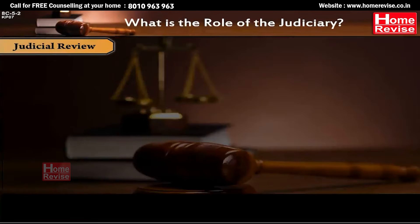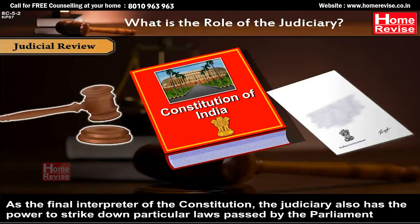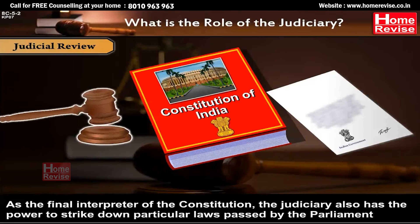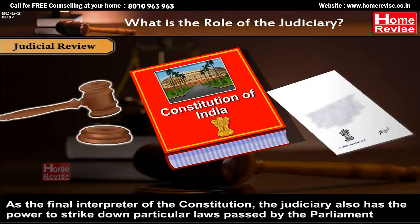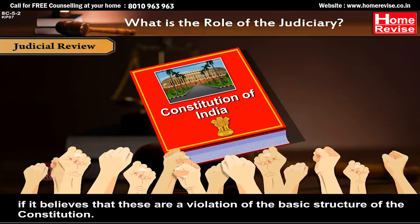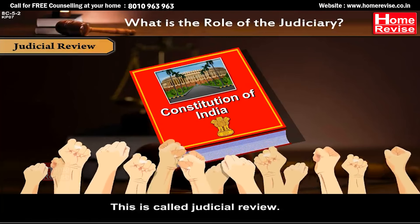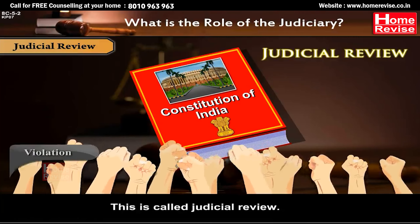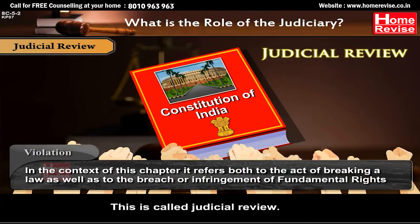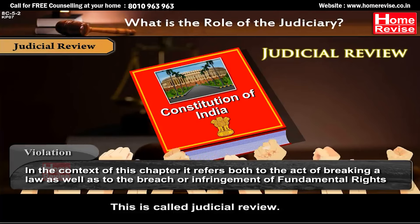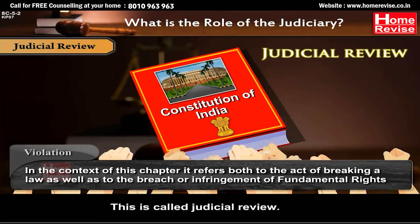Judicial Review: As the final interpreter of the Constitution, the judiciary also has the power to strike down particular laws passed by the Parliament if it believes that these are a violation of the basic structure of the Constitution. This is called Judicial Review. In the context of this chapter, 'violation' refers both to the act of breaking a law, as well as to the breach or infringement of fundamental rights.